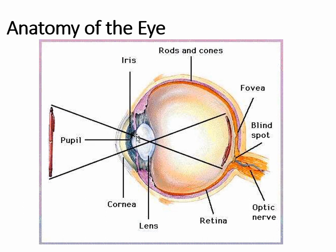The pupil is the hole in our eye — that black circle you see when you look at somebody's eye. A pupil can dilate, which means it gets really big, or constrict, which means it gets really small, depending on how much light is in our environment. What allows our pupil to dilate and constrict is our iris. Our iris is a muscle and it is the colorful part of the eye. If you have brown, hazel, or blue eyes, that colored part of your eye is your iris.